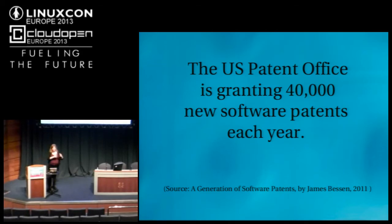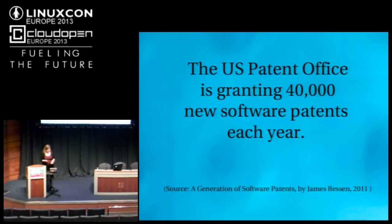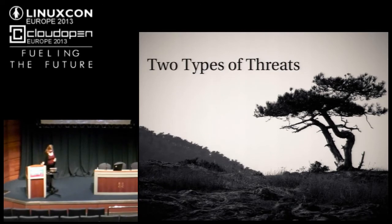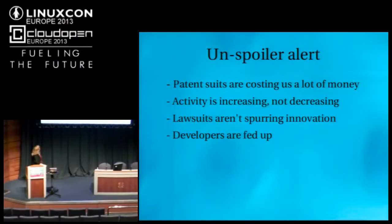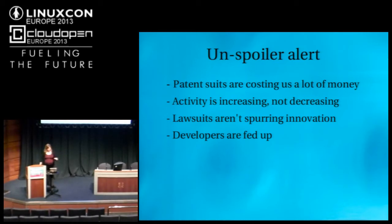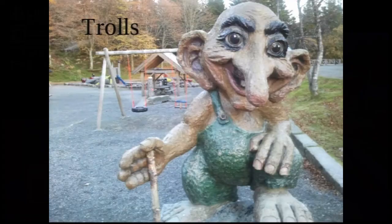In Europe it's a little different — you have to do more of a semantic dance to get a patent on a software-related invention, but it's not impossible for the real substance of the patent to be software with some hardware around it. Two types of threats: when we talk about patent aggression, it can come from two different places. Patent suits are costing us a lot of money — in the US it's about 80 billion dollars per year. We know the activity is increasing and not decreasing, and those lawsuits are not spurring innovation. So the first type of threat is trolls.